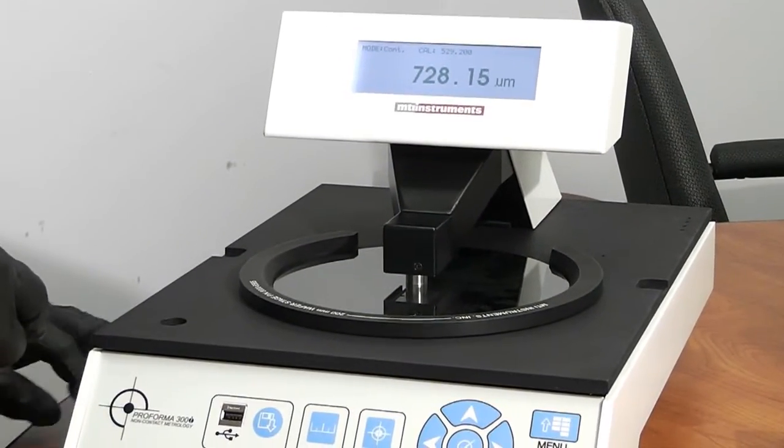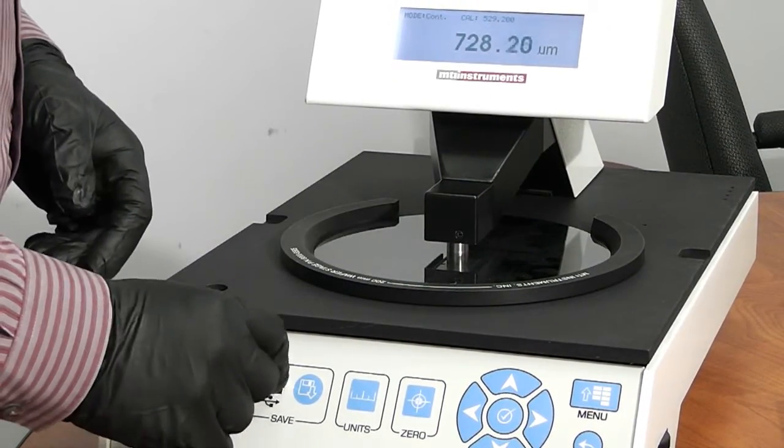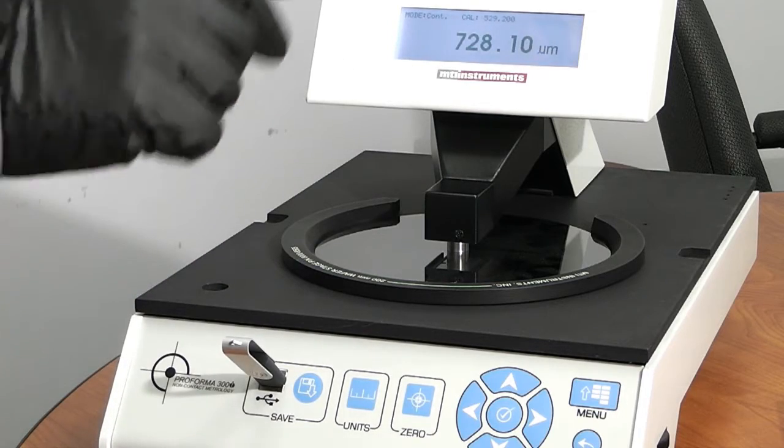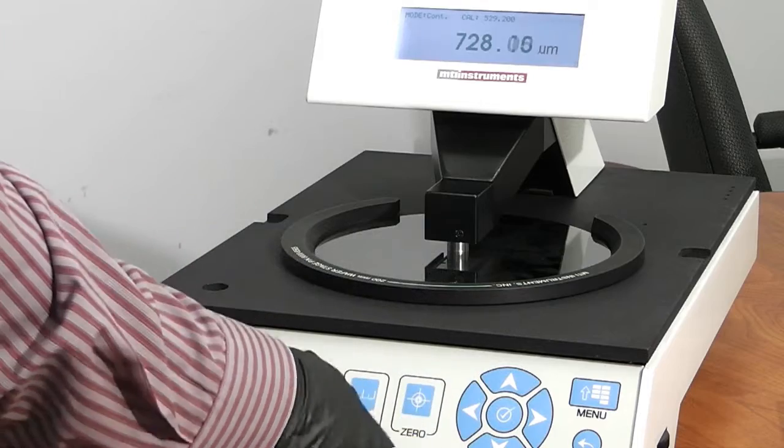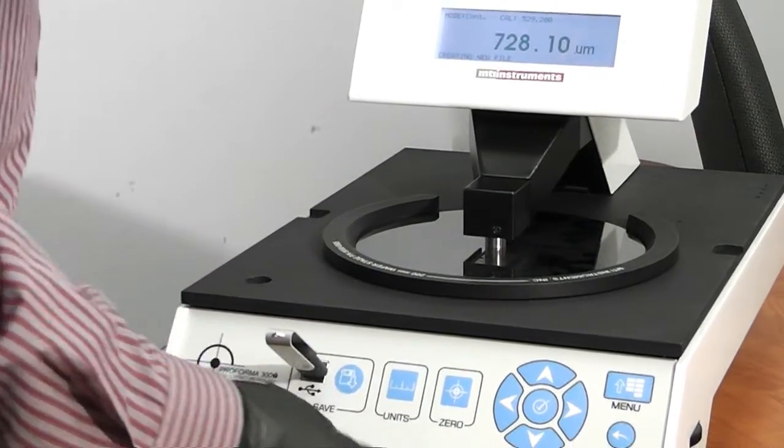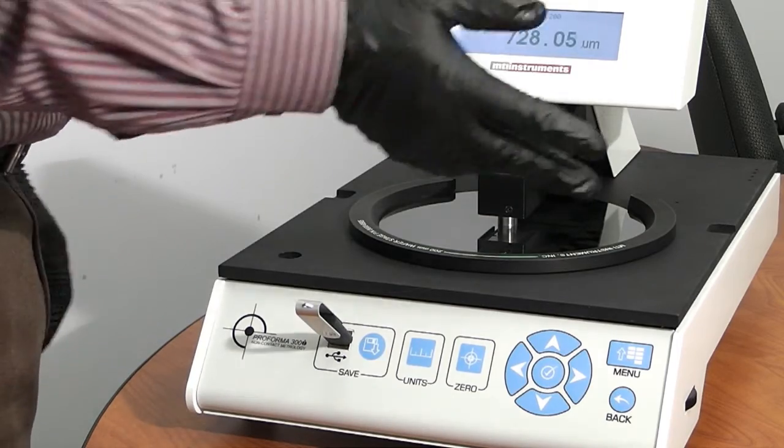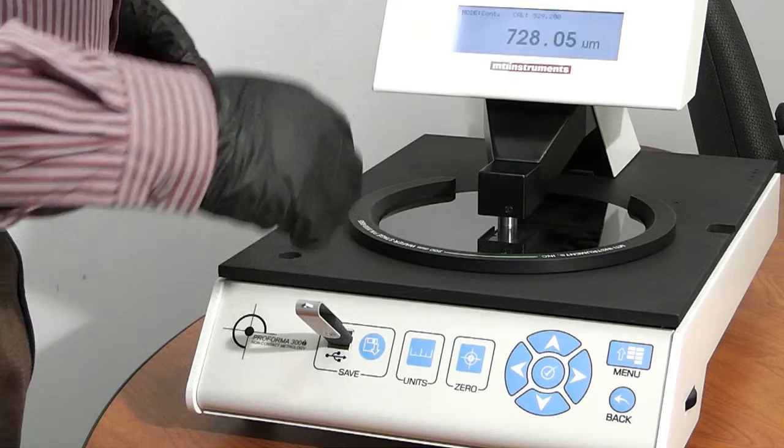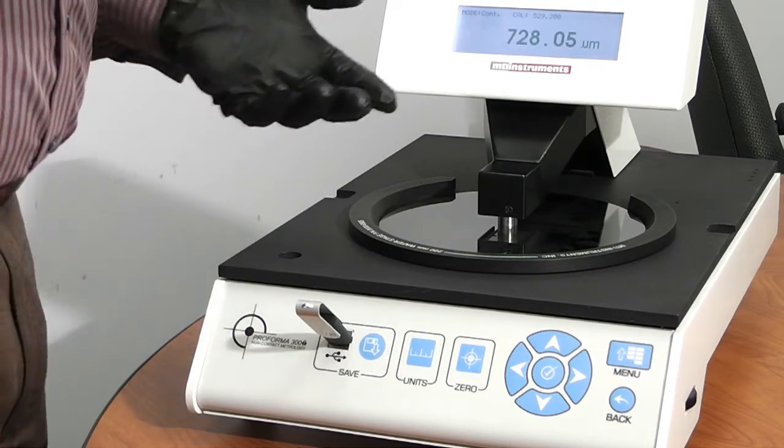One of the other things we can do if we want to record the center point reading of this, we also have a feature here. If we put a thumb drive in, and we've set this up to export our data to a USB thumb drive in the setup menu, all we have to do is hit the save command here, and you can see saving data. So if I wanted to measure, say, 300 wafers, every time I measure a wafer, I press the save, and then it gets written to the thumb drive, so we have a record of that.